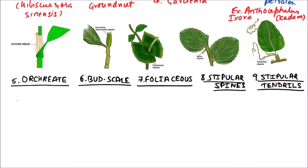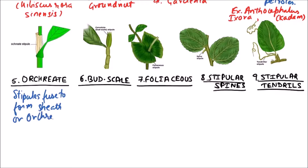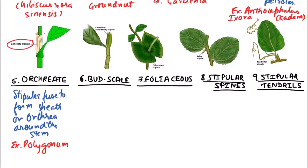The next type is Ocreate stipule. In Ocreate stipule, the stipules fuse to form a sheath or ocrea around the stem. Examples include Polygonum. This ocreate stipule is clearly visible, enclosing the stem.